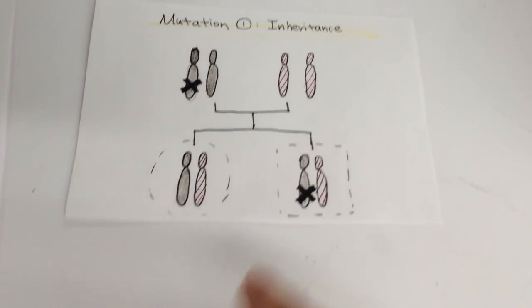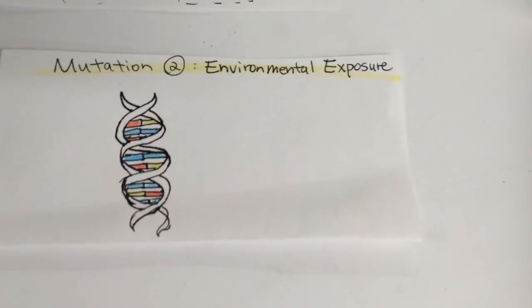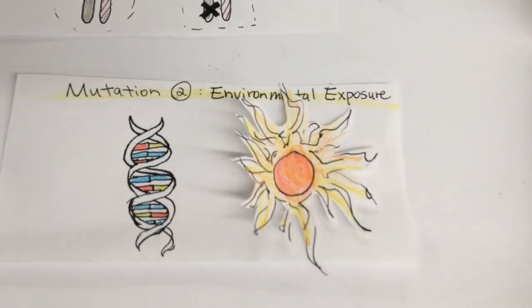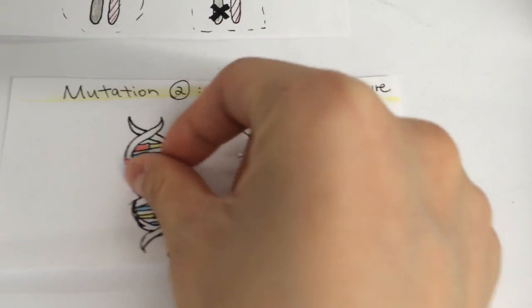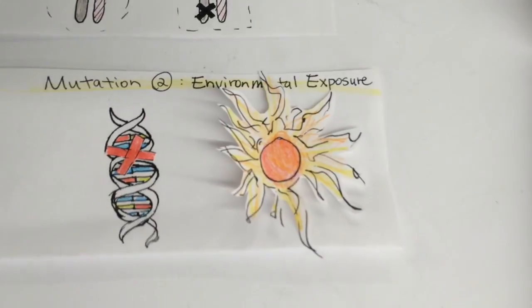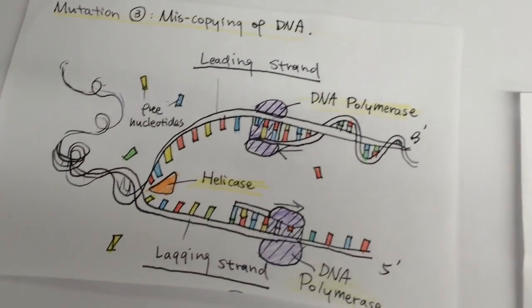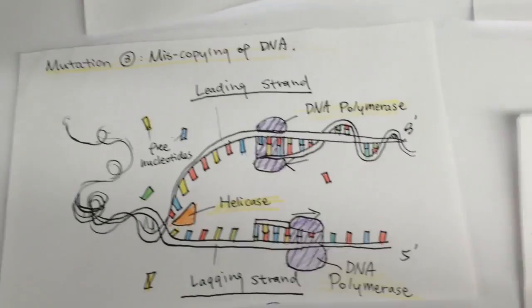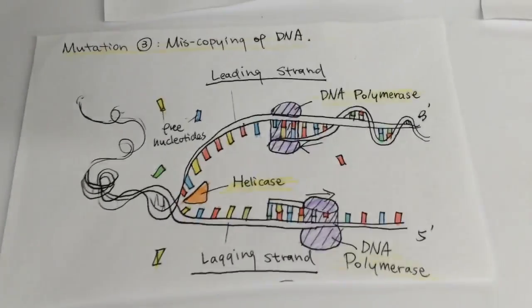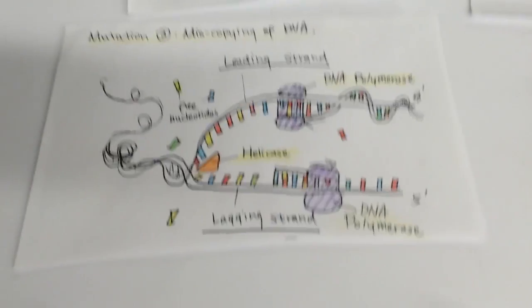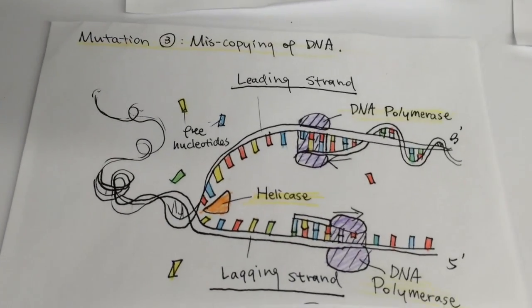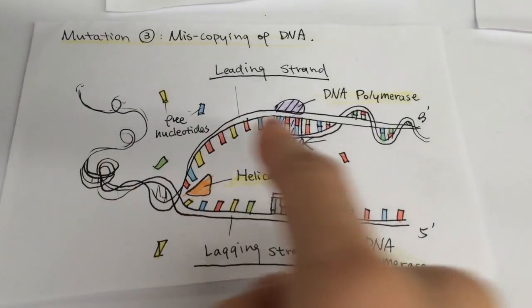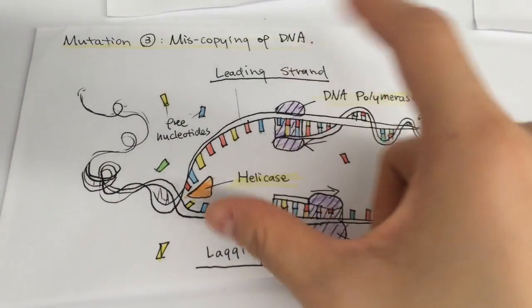Mutations can also result from environmental exposure, such as radiation from sunlight. Lastly, mutations can happen because of miscopying of the DNA. In order to understand this, one has to first look at the process of DNA replication. DNA replication takes place in the S phase of the cell cycle. The process starts with the enzyme helicase unzipping the double helix of the DNA.